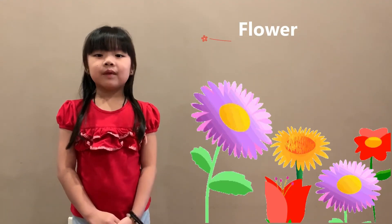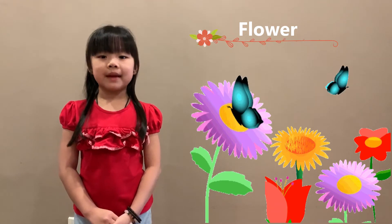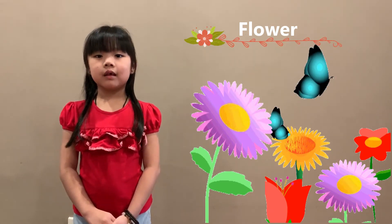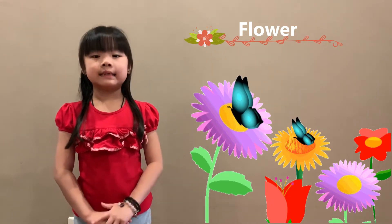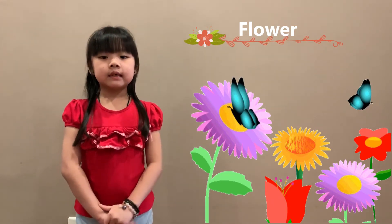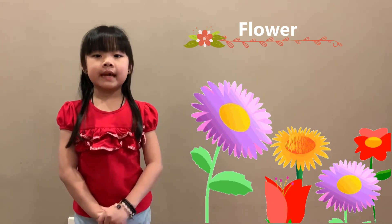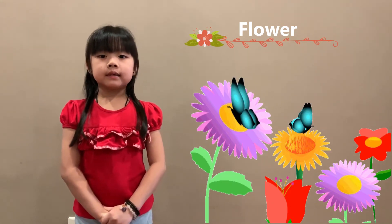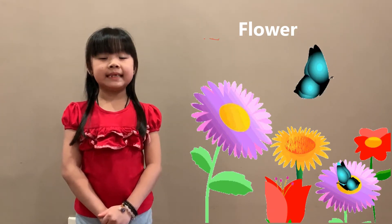Next, flower. Flower is the most beautiful part of the plant. Usually they are very colourful and they attract bees and other insects. Flower also have seeds so they can reproduce themselves, and some will grow fruits that we can eat.